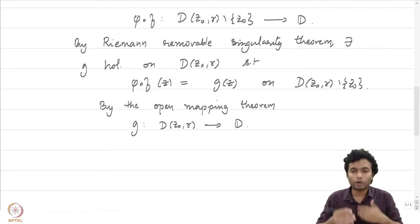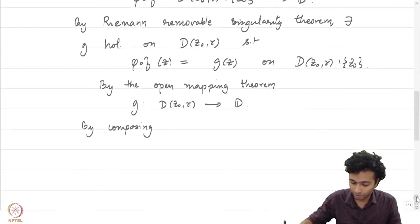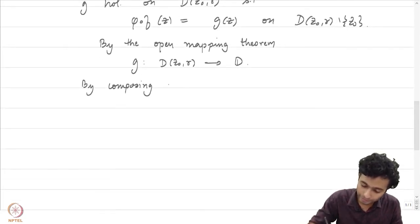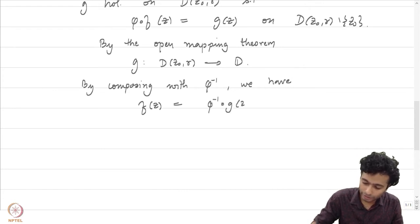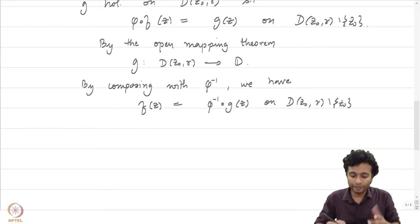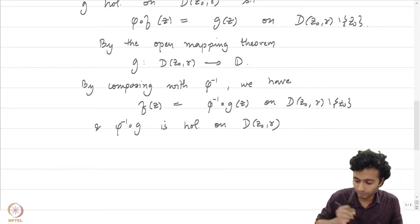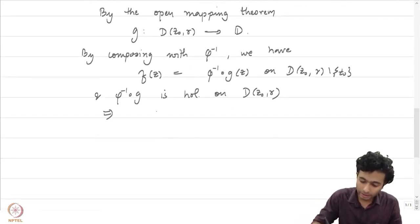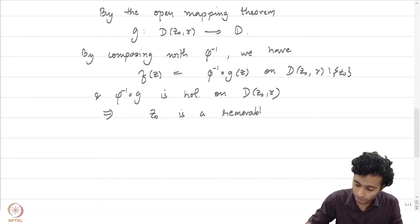That is good, because now by composing with φ⁻¹, which is a map from D to H, this composition makes sense. We have f(z) = φ⁻¹∘g(z) on D(z₀, r) minus {z₀}, and φ⁻¹∘g is holomorphic on D(z₀, r). Therefore, z₀ is a removable singularity of f by the very definition of removable singularity.